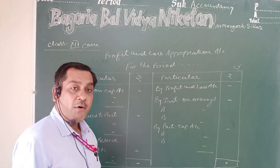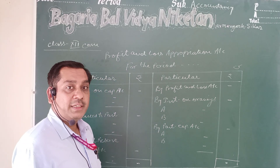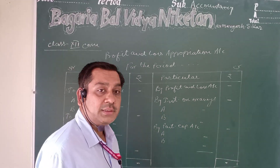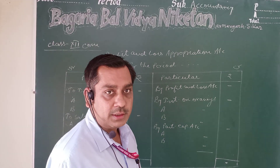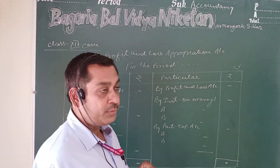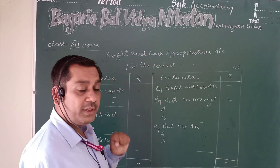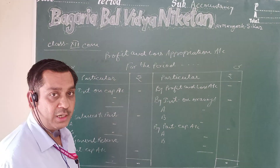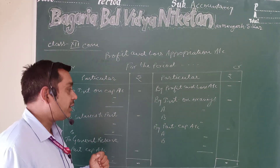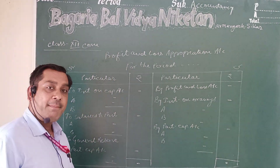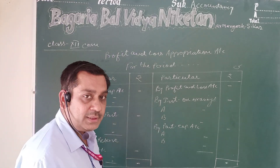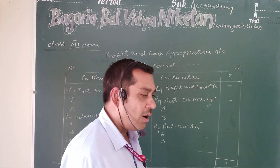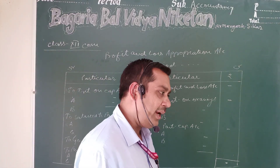The Profit and Loss Appropriation Account is nominal in nature. For a nominal account, the rule is: debit all expenses and losses, credit all income and gains.